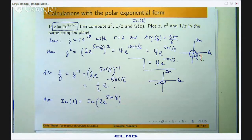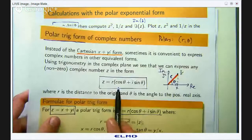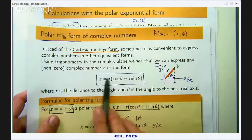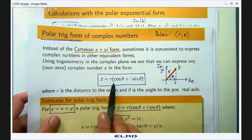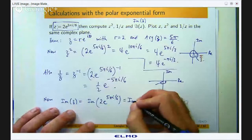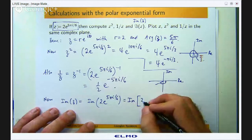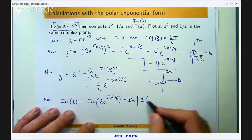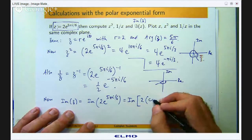this polar trig form over here. Okay I already know what theta is and I know what r is. So I can write this as the imaginary part of 2(cos of this angle + i sin of this angle).